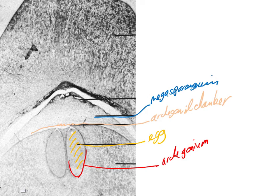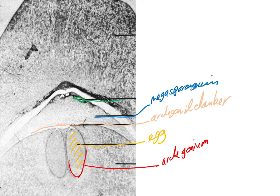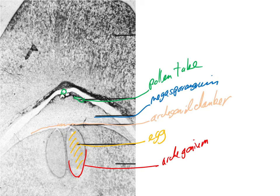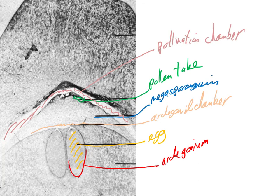Growing down through the megasporangium already at this stage we can see pollen tubes — just starting to grow down through the megasporangium. Outside the megasporangium is the place where the pollen grain landed, and the pollination chamber.